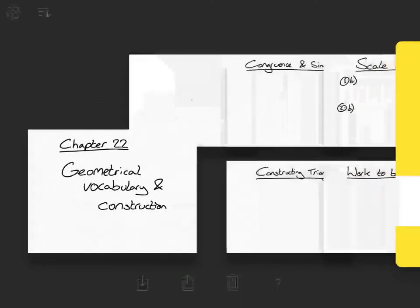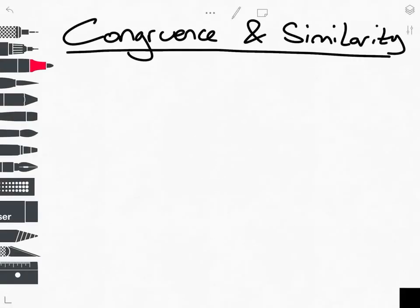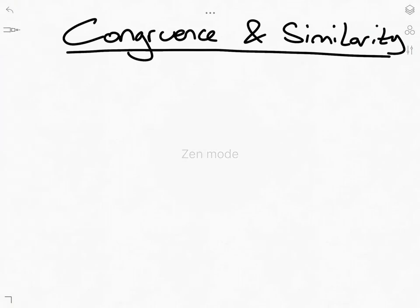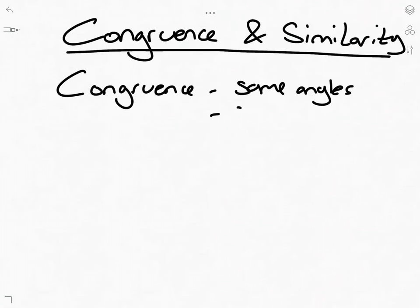It's called Geometrical Vocabulary and Construction, which makes it sound a bit confusing, but it's not. The first thing we come across is the congruence and similarity on page 284. So here they're talking about it in terms of triangles, and you've got the explanations on the page, but I thought I'd explain it quickly because it might help you out. So congruence, this means the shape has the same sized angles and the same side lengths.